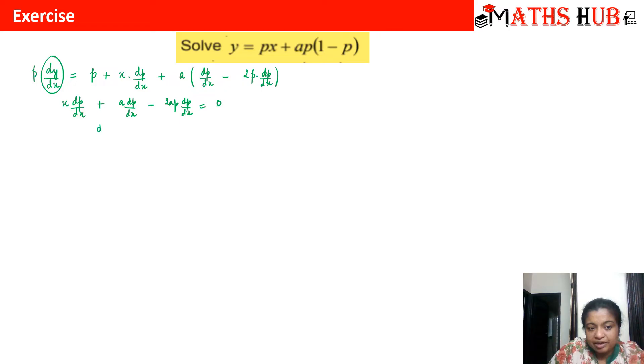We can take out dp by dx common from all the terms and we get x plus a minus 2ap equals 0. So we get either dp by dx equals 0 or x plus a minus 2ap equals 0.